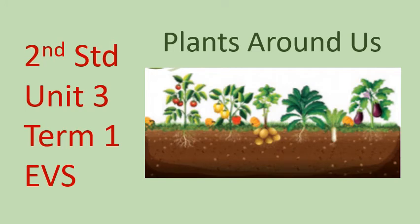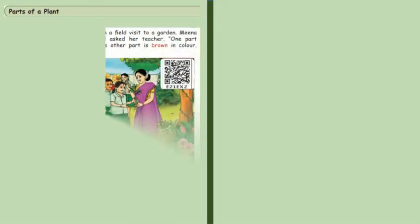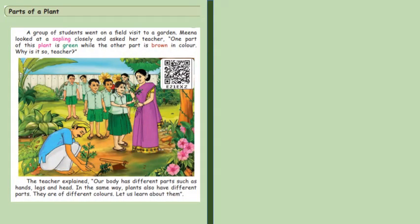Plants around us, Second Standard Unit 3 Term 1. A group of students went on a field visit to a garden. Meena looked at a sapling closely and asked the teacher, one part of this plant is green while the other part is brown in color. Why is it so, teacher?